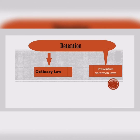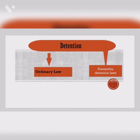Now we will understand the historical background of preventive detention laws. The Britishers passed the Rowlatt Act of 1919, also known as the Black Laws, under which they derived enormous powers to arrest anybody on the basis of suspicion — there would be no warrant, no trial, nothing of that sort. This is the origin of preventive detention laws, introduced by the colonial government, against which Gandhiji organized the first nationwide protest.